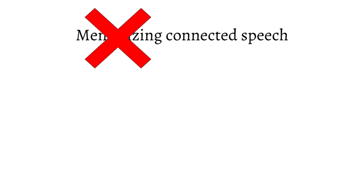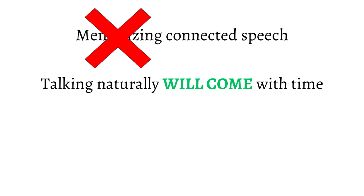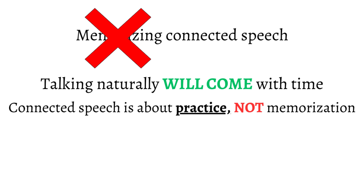On the other hand, memorizing connected speech is not important because native speakers don't need you to use connected speech to understand you. If you speak English carefully and pronounce each sound, you may sound a bit unnatural, but you will be understood. The best way to understand and utilize it is to listen to it as frequently as possible. You can even record yourself and have connected speech conversations with native English speakers, and at that point, talking naturally will come with time. It's very critical to understand that connected speech is about practice, not memorization. The names of the connected speech types are not needed for memorization, so it's objectively better to listen to connected speech and speak it.